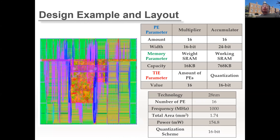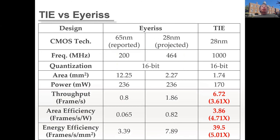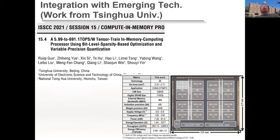Based on this compact computation scheme, we designed a corresponding hardware architecture in CMOS 28nm technology — a 16-PE design operating at 1 GHz. Evaluations across different layers show good area efficiency and energy efficiency, outperforming prior works from Stanford and MIT in throughput, area efficiency, and energy efficiency. A group from Tsinghua University further fabricated a chip based on our architecture using in-memory computing, published at ISSCC this year.